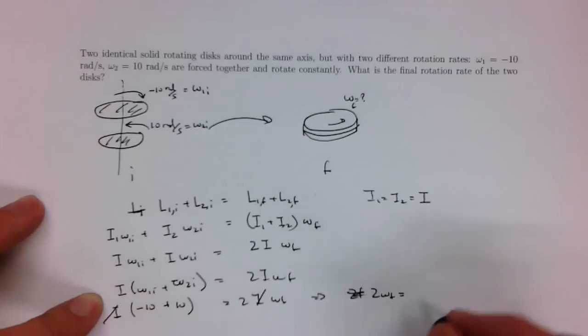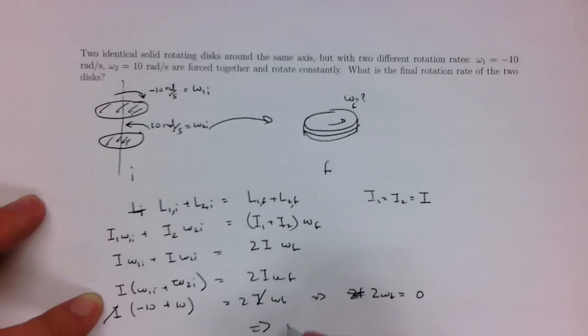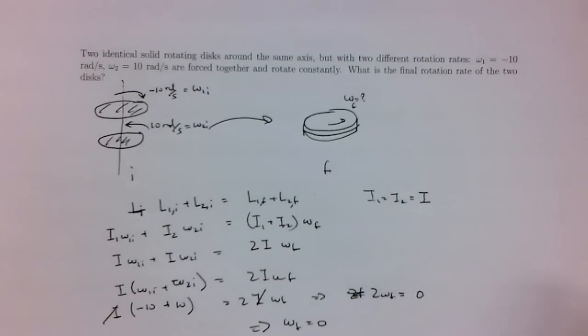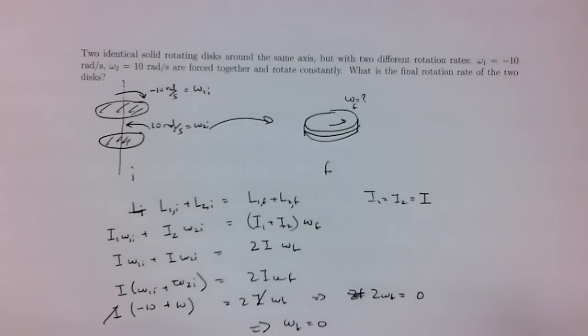Minus 10 plus 10, 0. Alright, so that gives me that omega F is equal to 0. Alright, okay, so that was it. That was a pretty easy problem. Hopefully, that will help you with the other ones.